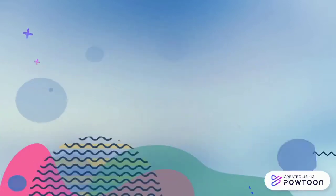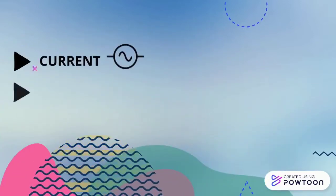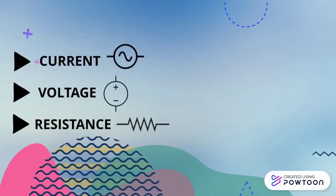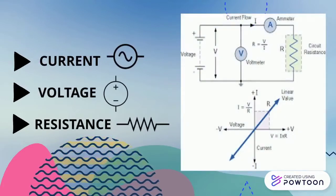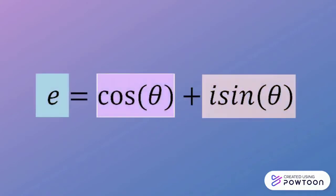Complex numbers are used to calculate current, voltage, and resistance in AC circuits. The potential difference between two AC power supplies concerning time is a typical application of complex numbers, precisely Euler's formula.